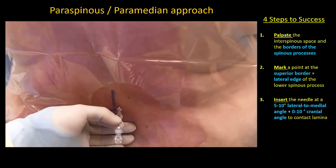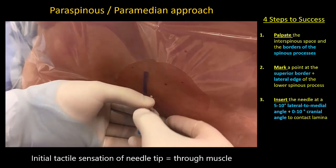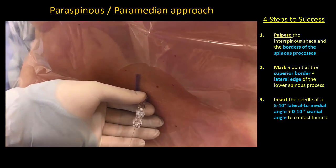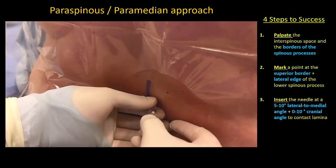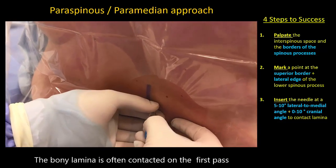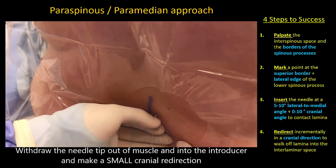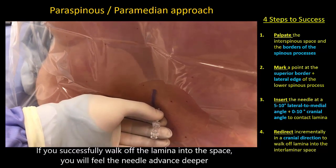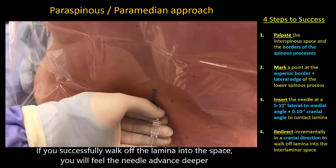Third, insert the introducer spinal needle at a 5 to 10 degree angle to the midline and with only a slight cranial angle. This will often contact the lamina on the first pass. If so, the fourth step is to withdraw and make incremental redirections in a cranial direction without changing the lateral to medial angle. This will walk the needle tip off the lamina and into the interlaminar space.